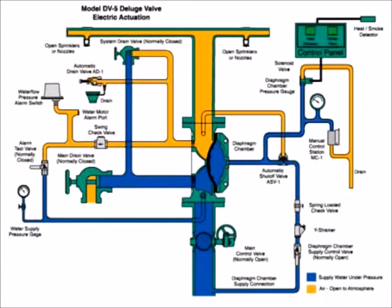The system is shown ready for operation. The water supply contains water under pressure shown here in blue. This is also connected to the diaphragm chamber, the solenoid valve, and the manual control station.